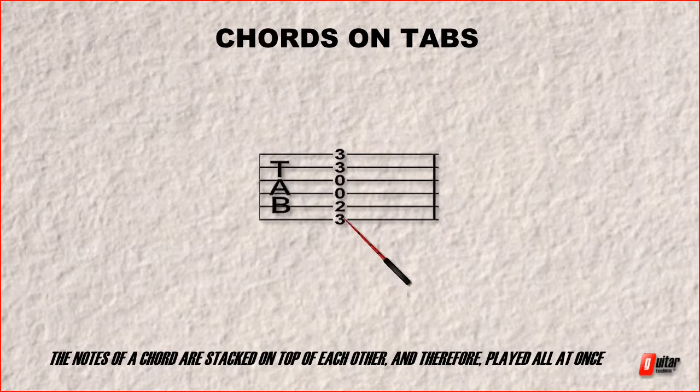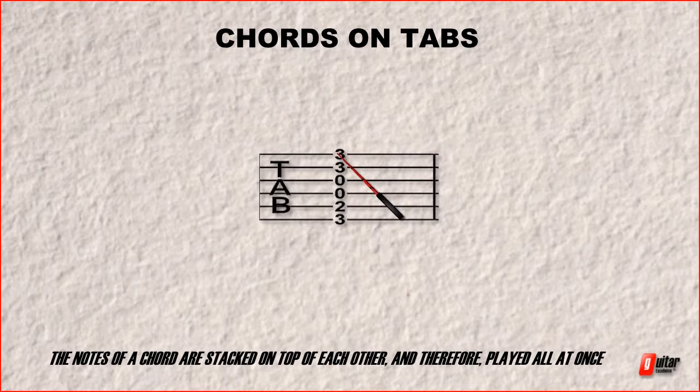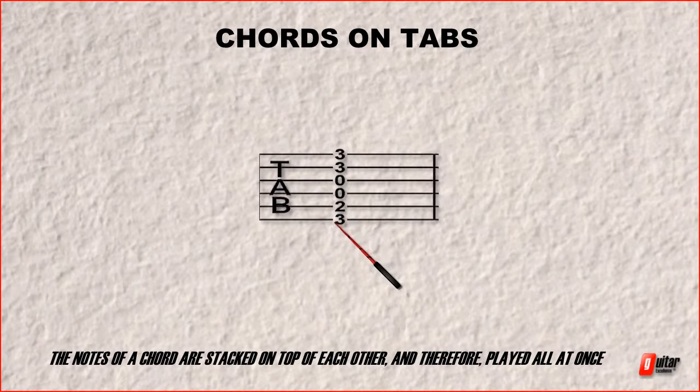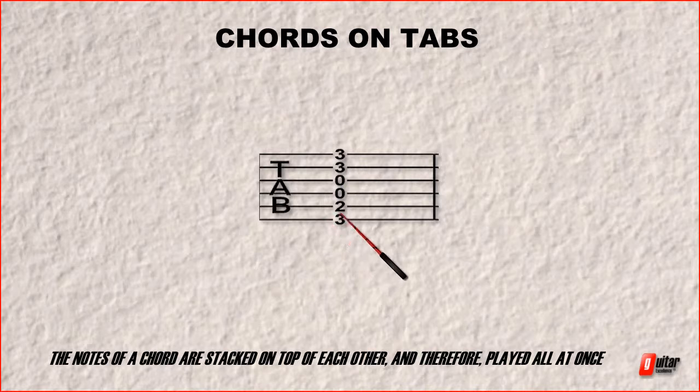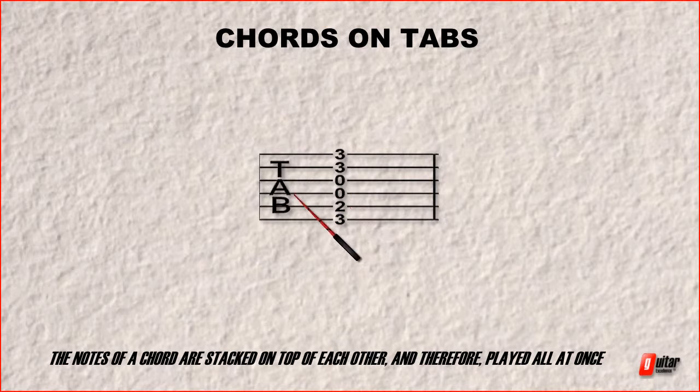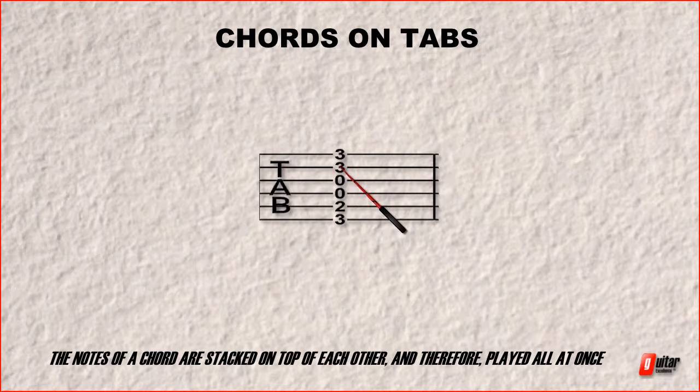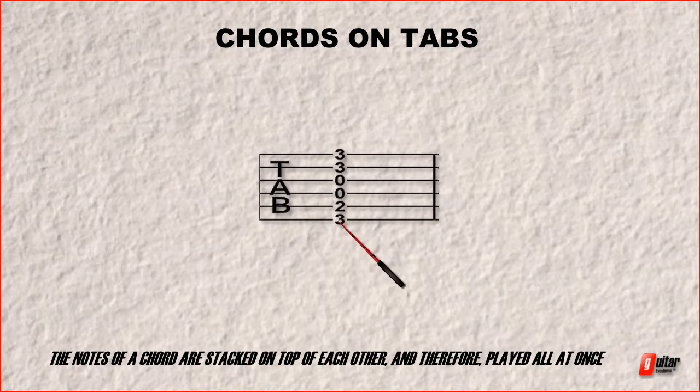So the numbers still represent the frets. And the only difference is we're playing them all at the same time. So that three still represents the third fret of the low E. We're still on the second fret of the A string. Now a zero means you're going to play that string open. Same with the G, the third fret of the B string and the third fret of the high E string. So that's actually going to give you a G major chord.